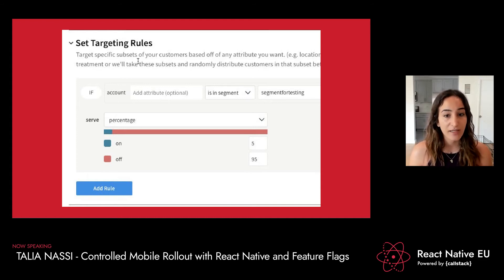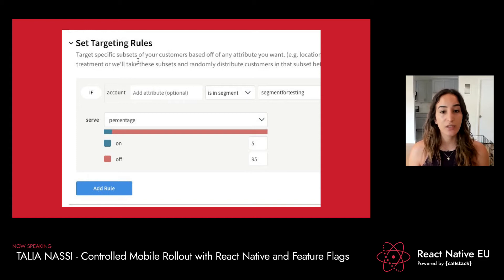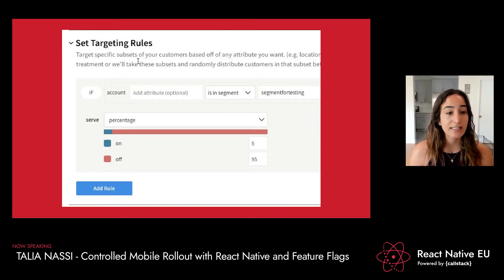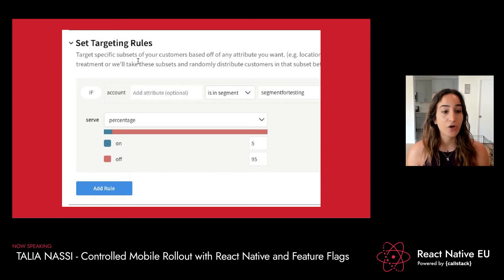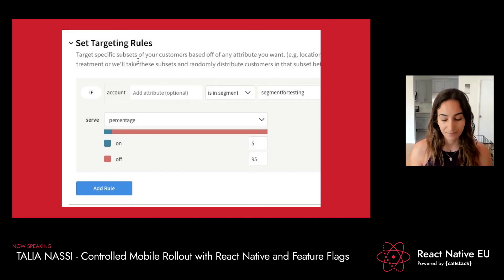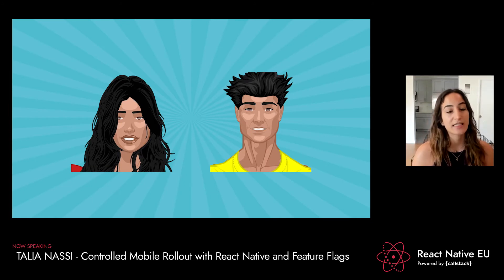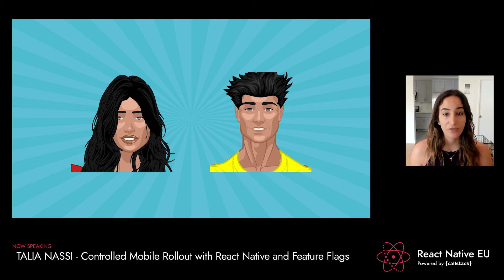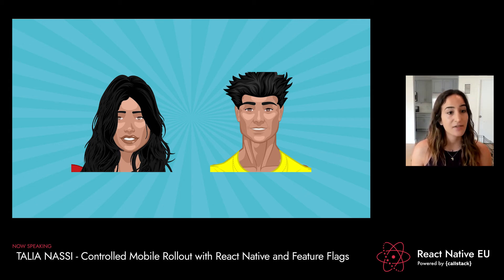They go into the feature flag configuration page — this is what it looks like in Split — and set what are called targeting rules. Targeting rules define who sees a feature and who does not. Debbie and John set 5% of users to see the new barcode feature, with the remaining 95% seeing the existing default behavior. As their confidence in the barcode feature increases and they know it's working well, they can slowly move to 100% allocation. Now Debbie and John are happy because they have a new process for mobile controlled rollout with an extra layer of risk mitigation through feature flags, and their developer velocity increases.